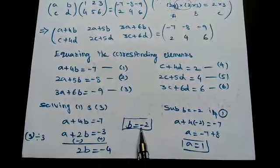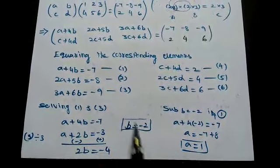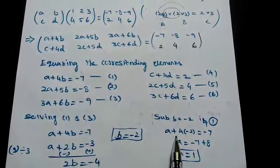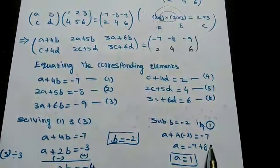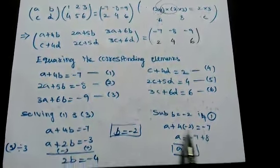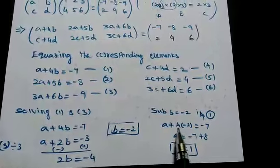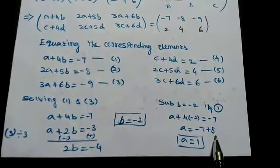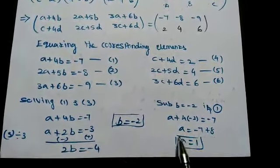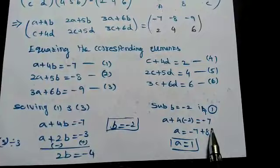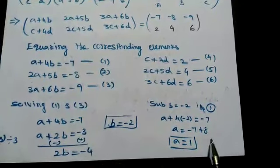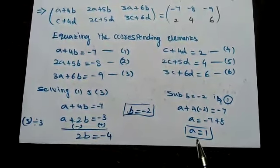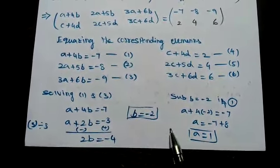Substitute b = -2 into equation 1: a + 4×(-2) = -7, so a - 8 = -7, giving a = -7 + 8 = 1. So we have found a = 1 and b = -2.